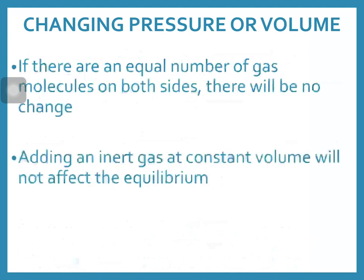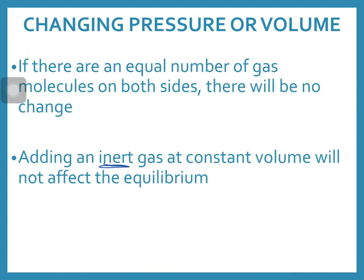If an inert gas is added at constant volume, there will be a shift in total pressure due to the additional molecules, but that will not impact the equilibrium — this only applies, however, if it's an inert gas.